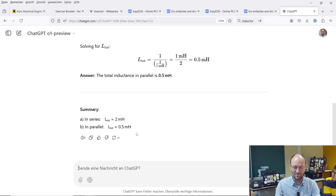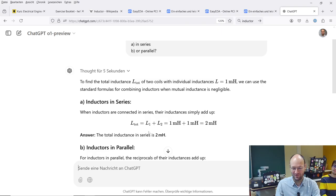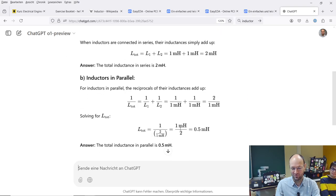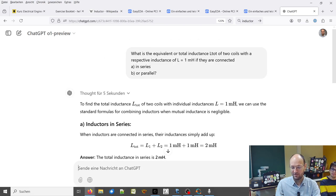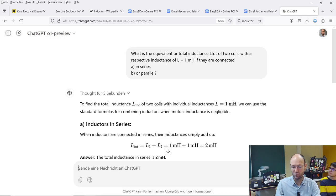So here we also get in summary the same results as before. The calculation here, from my point of view, does not look too bad. It's also including the units. Okay, so ChatGPT is quite strong today, but as I said, these tasks are also not super complicated.